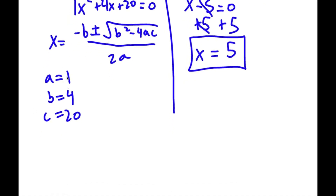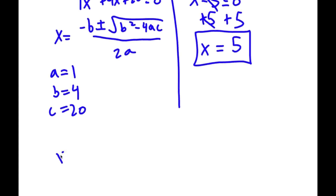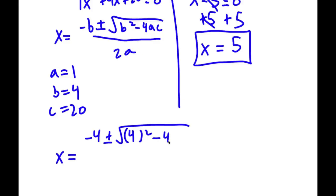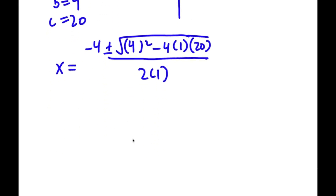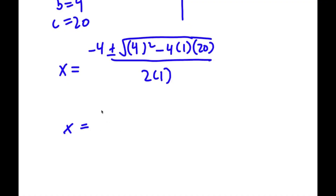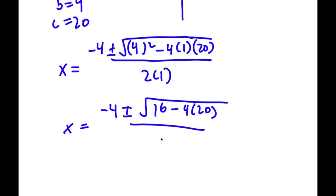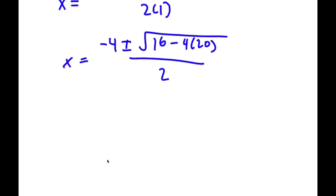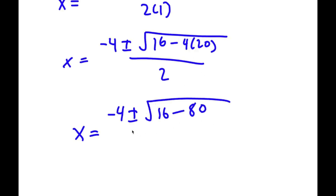So now all I have to do is substitute a, b, and c into the quadratic formula. I have x is equal to negative 4 plus or minus the square root of 4 squared minus 4 times 1 times 20, all over 2 times 1. That gives me negative 4 plus or minus the square root of 16 minus 80, all over 2.